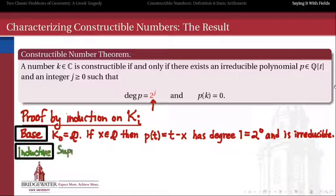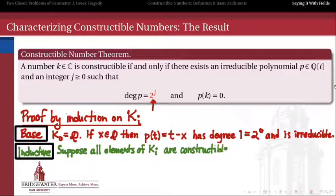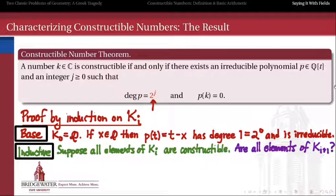So it's the inductive step that's a little more interesting. Let's suppose for the moment that this works for k sub i. In other words, that all elements of k sub i are constructible according to the hypotheses of this theorem. What we then want to show is that the elements of ki plus 1 also fit this bill of constructibility. So if ki's are all constructible, they satisfy these polynomial hypotheses, why then do the ki plus 1's?